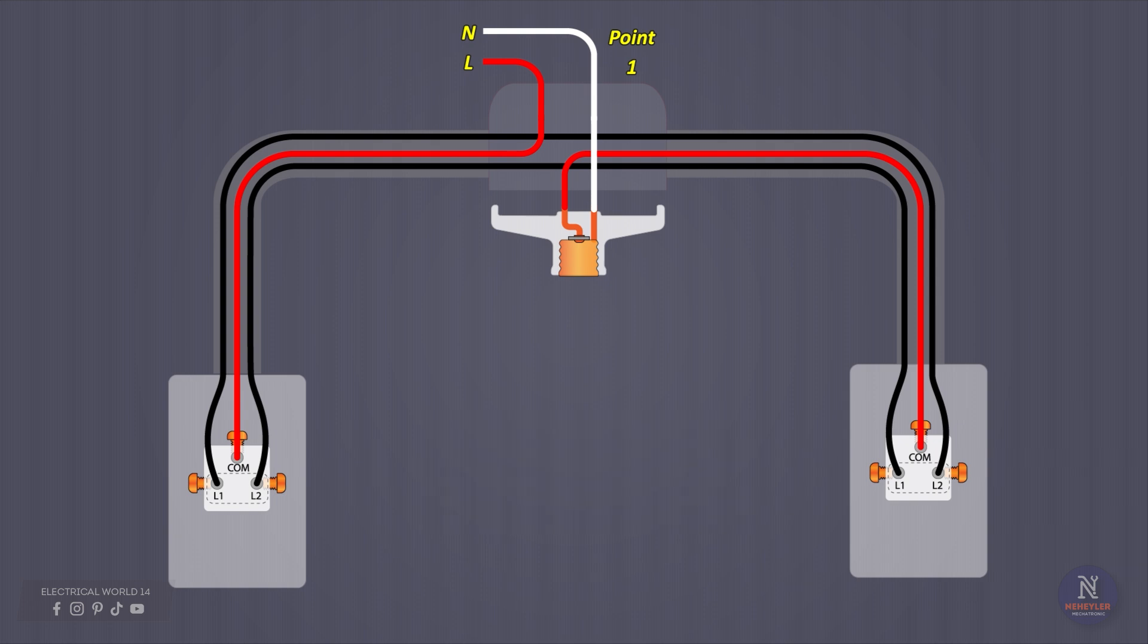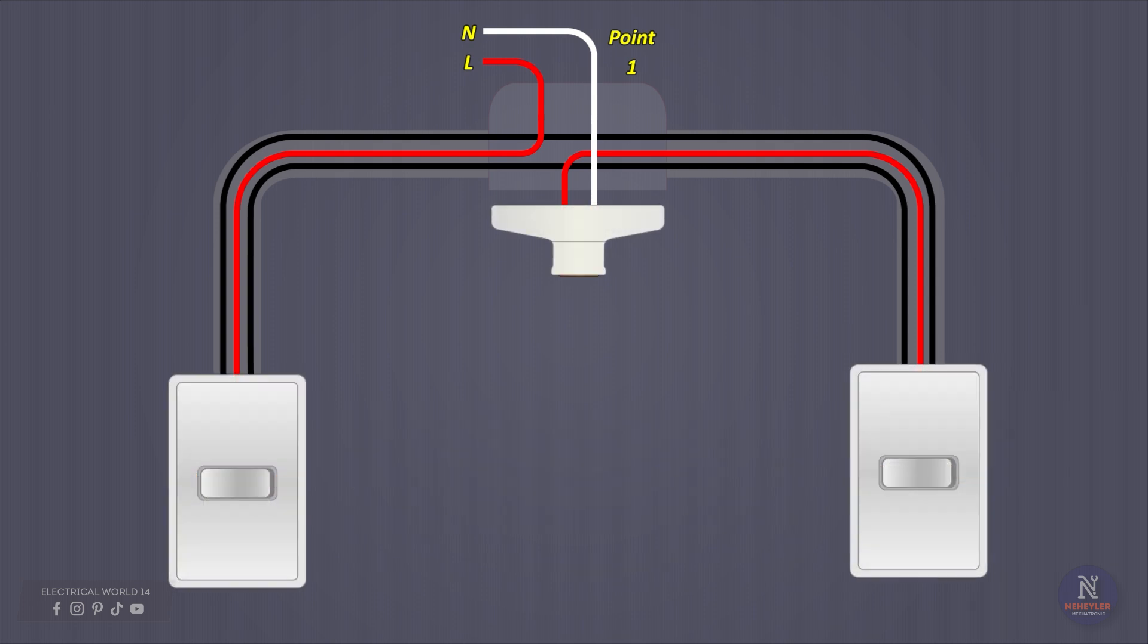Once we have everything wired and connected, the socket is secured and the light is placed. If everything is fine, when you press a switch, the light should turn on. When you press the same switch or the other one, the light should turn off.